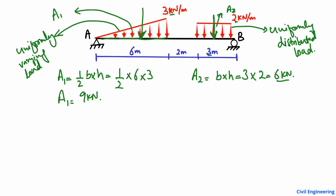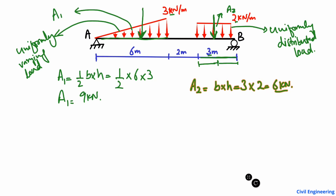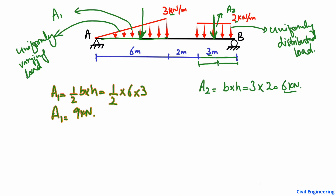Keep in mind that for the rectangle, whose length is 3 meters, the centroid is simply at the halfway point — 1.5 meters from one end and 1.5 meters from the other end. So the 6 kN point load acts 1.5 meters from each side of the UDL region.